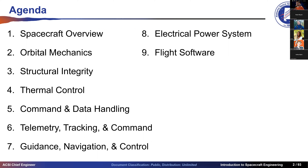Today we'll cover an overview of what spacecraft are, some orbital mechanics, how to physically build them, structural integrity, thermal control, command and data handling, telemetry tracking and command for ground communications, guidance navigation and control for attitude control and sensing, navigational propagation for updating state vectors, and the electrical power system — how we generate, distribute, and provide power — capped off with a bit of flight software.